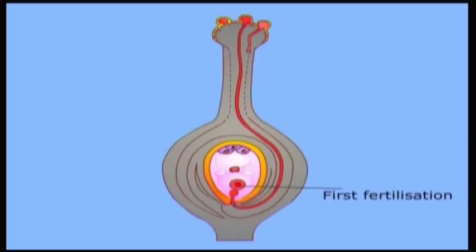The other male nucleus reaches the secondary nucleus which is already in 2N condition and fuses with it to form endosperm nucleus which will be triploid that is 3N. This is second fertilization in the embryo sac which is unique in flowering plants.